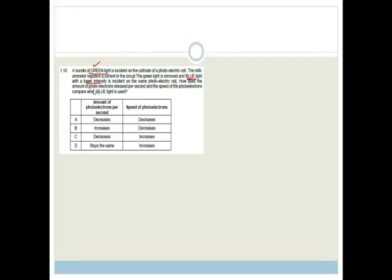A bundle of green light is incident on the cathode of a photoelectric cell. The milliamp meter registers a current in the circuit. The green light is removed, and blue light with a lower intensity is incident on the same photoelectric cell. How does the amount of photoelectrons released per second, and the speed of the photoelectrons compare when blue light is used? What you need to understand is that we've got Roy G. Biv. Red, orange, yellow, green, blue, indigo, violet. Then we've got infrared, and we've got ultraviolet.